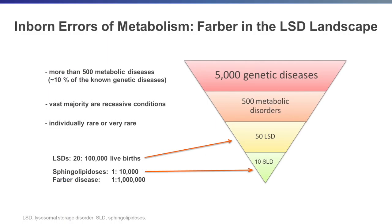Just a bit of background to set the framework where Farber disease resides as a clinical problem. There are estimates of 5,000 to 6,000 Mendelian genetic diseases, and of this large number, a much smaller number of 500 are metabolic disorders, or inherited metabolic diseases. Most of these are single Mendelian gene inherited disorders. Within that group of inherited disorders of metabolism — inborn errors of metabolism — you find 50 or more lysosomal storage diseases. This group will later show you a picture of the range of diseases that we see.